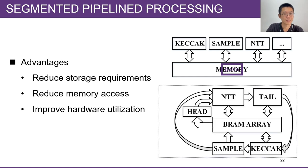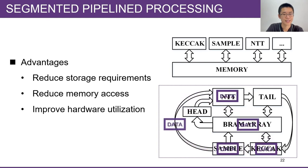In the proposed segmented pipeline processing method, data are processed by the modules in a pipeline manner. The intermediate results are transferred from the former module to the latter one without passing the memory. And in most time of the segment, modules work simultaneously. Therefore, this method can reduce storage requirements and memory access for intermediate results, and improve hardware utilization.